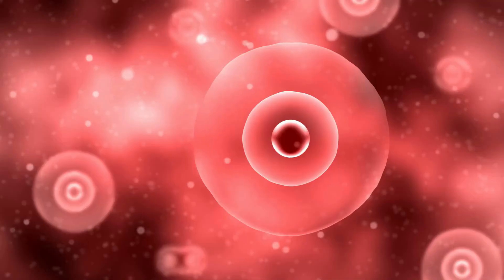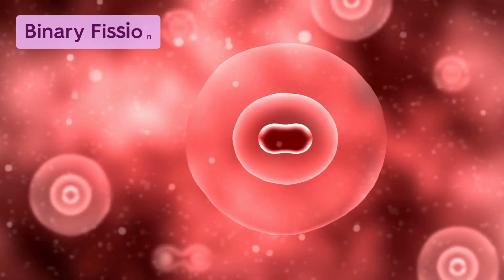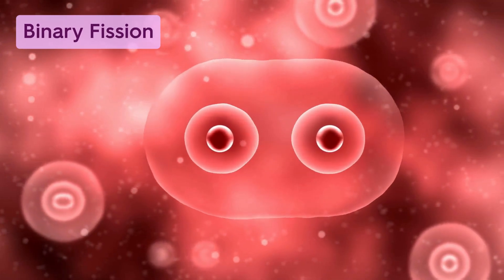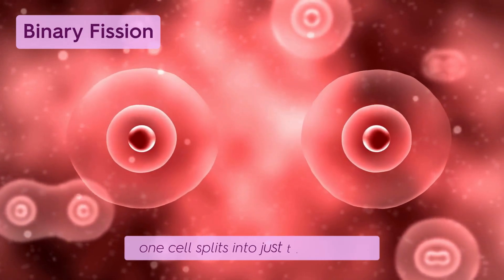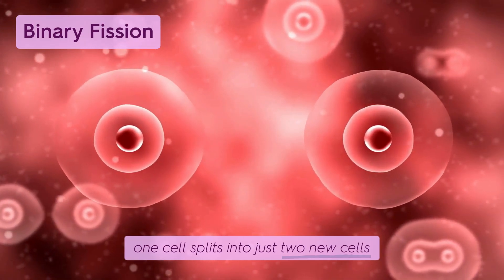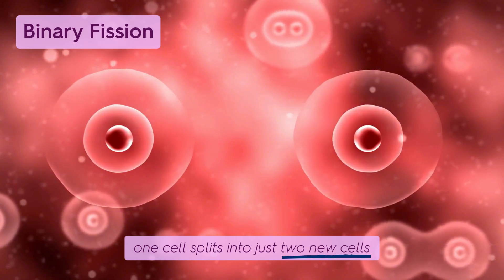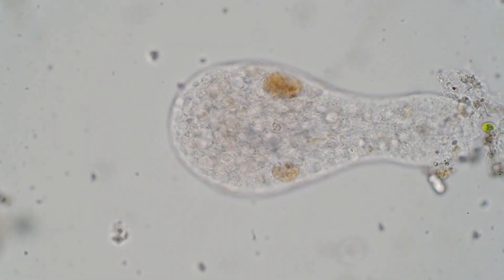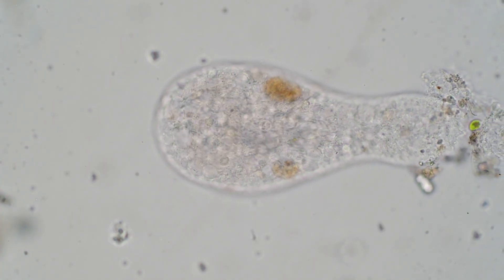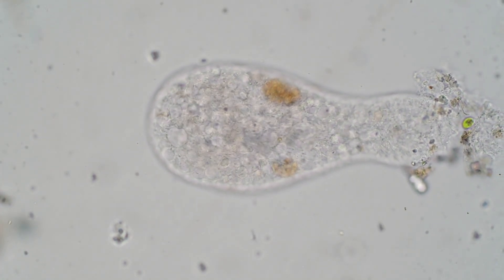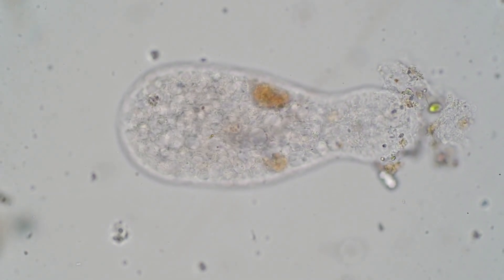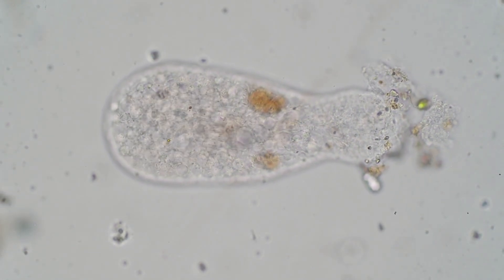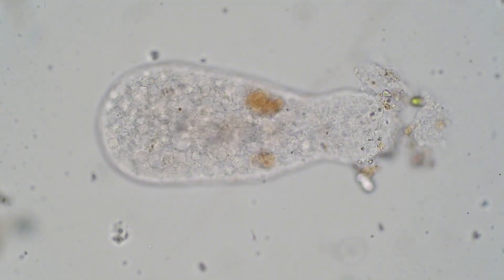Now let's look into the types of fission. First, there's binary fission. This happens when one cell splits into just two new cells — it's a simple, clean split. A great example is the amoeba: it copies its DNA, splits its nucleus, then divides into two identical cells.